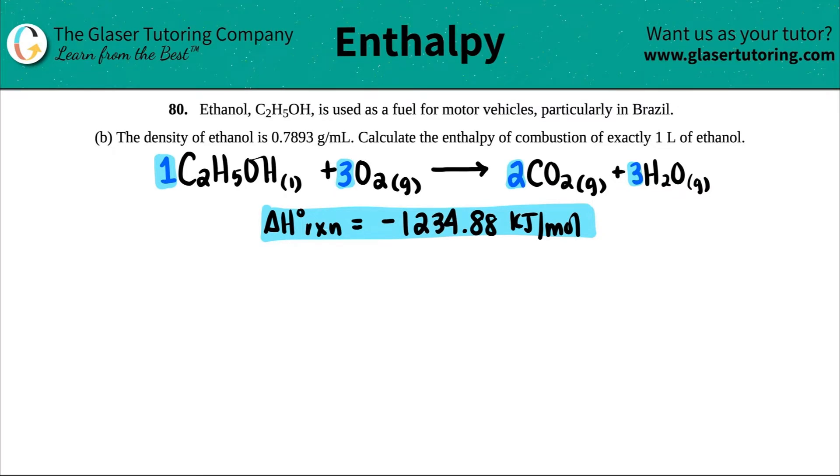Number 80. Ethanol, which is C2H5OH, is used as a fuel for motor vehicles, particularly in Brazil. And then we have letter B. So now they say the density of ethanol is 0.7893 grams per ml. Calculate the enthalpy of combustion of exactly one liter of ethanol.